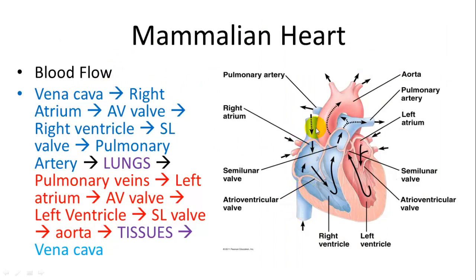Blood flow path: deoxygenated blood enters the right atrium through the vena cava, passes through the AV valve into the right ventricle, which contracts and squirts it through the semilunar valve into the pulmonary trunk and pulmonary artery to the lungs. The lungs oxygenate the blood, which returns through the pulmonary veins into the left atrium, through the left AV valve into the left ventricle, which contracts through the semilunar valve and out the aorta to the tissues, returning to the vena cava.